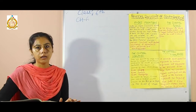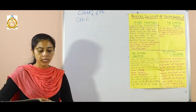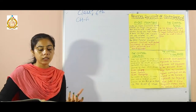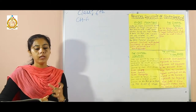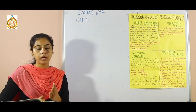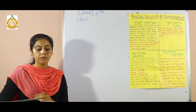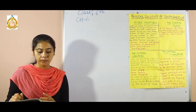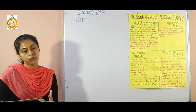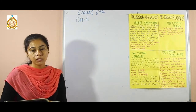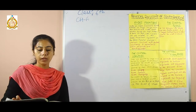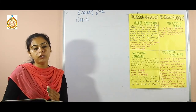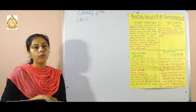South America is the fourth largest continent in the world. It is connected to North America by the Isthmus of Panama and lies in the southern hemisphere. The largest country in South America is Brazil, the smallest is Suriname, the largest river is the Amazon, and the largest freshwater lake is Lake Titicaca. The Tropic of Capricorn passes through South America, and 60 degrees west longitude divides South America into equal parts.